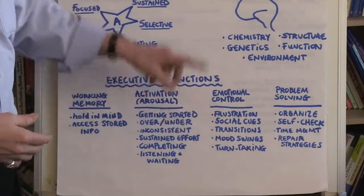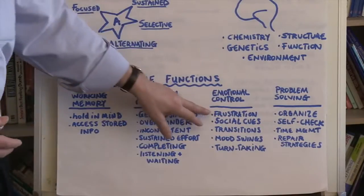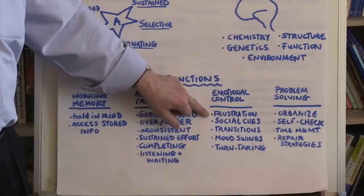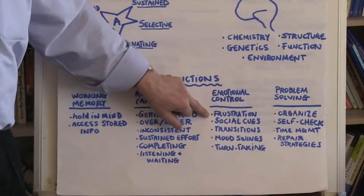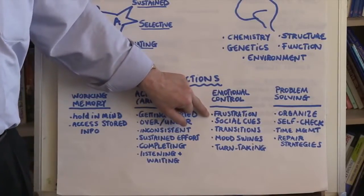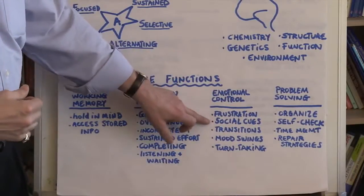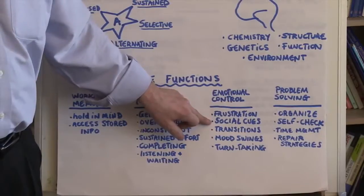In terms of emotional control, individuals with ADHD often will have low frustration tolerance. They just can't tolerate waiting. They just need to jump in, they need to talk, they need to share, they need to be right there in the mix. They may have difficulty reading social cues.